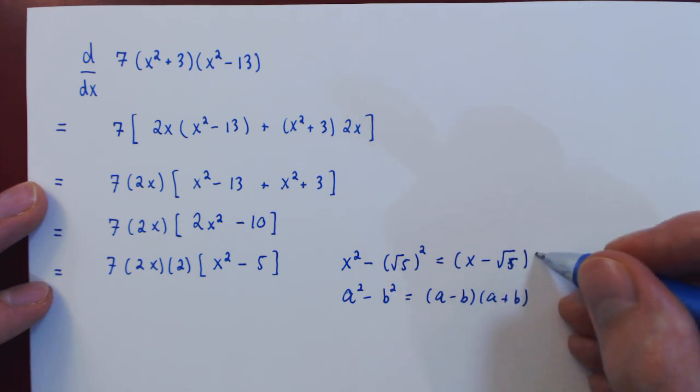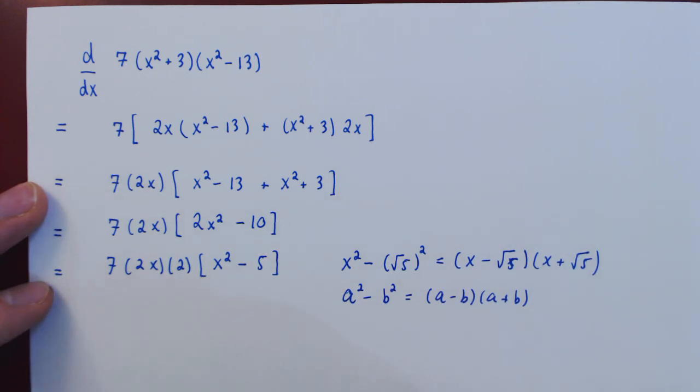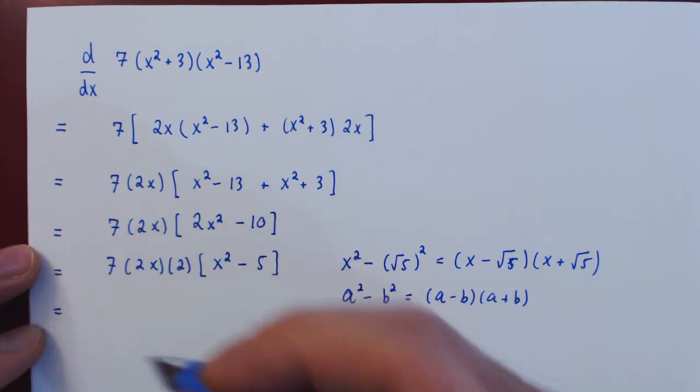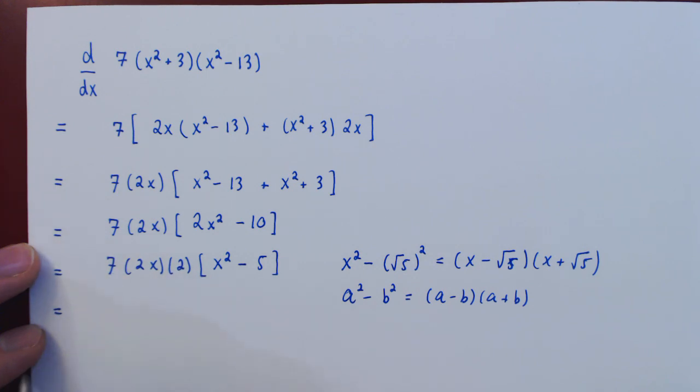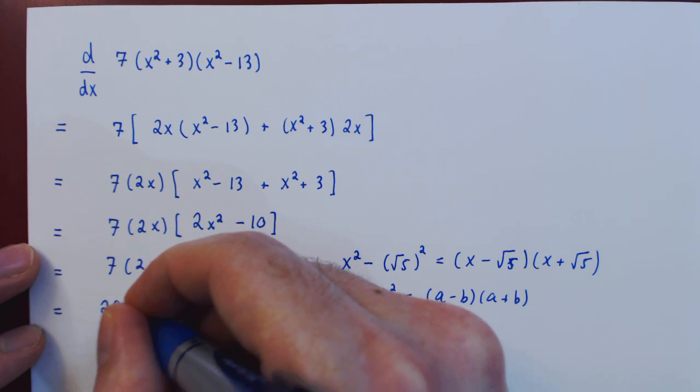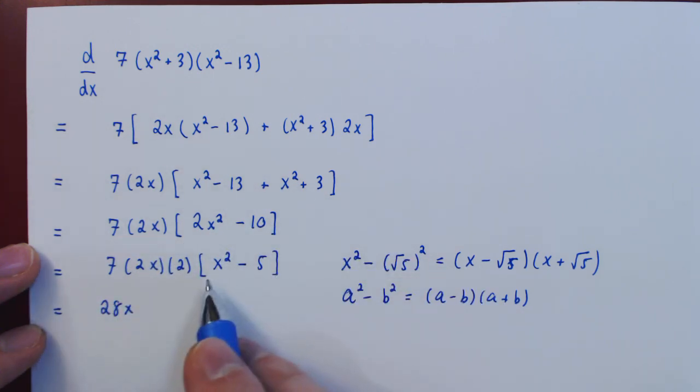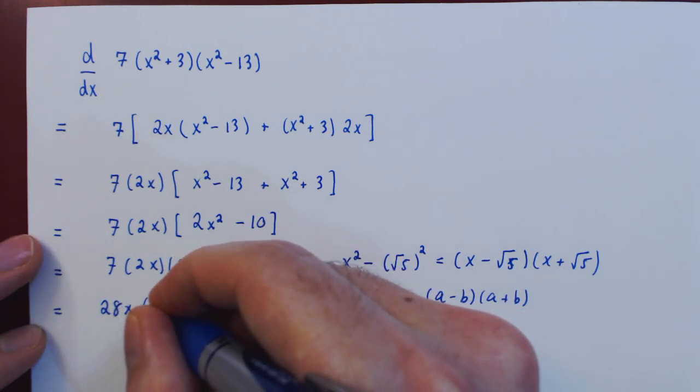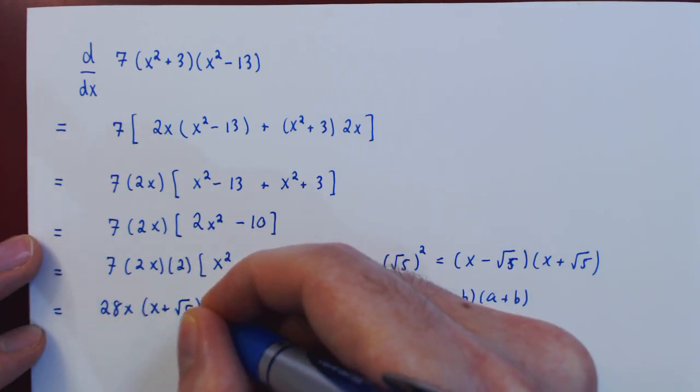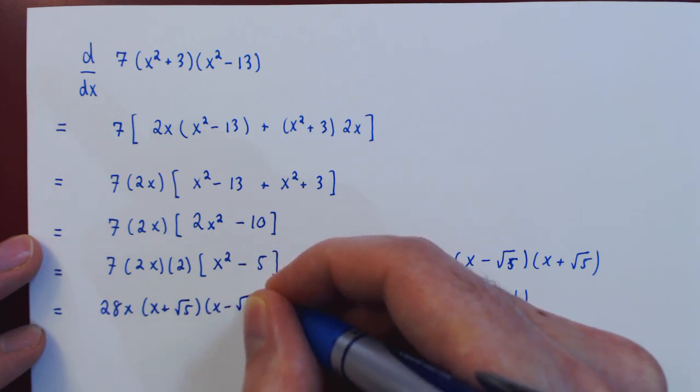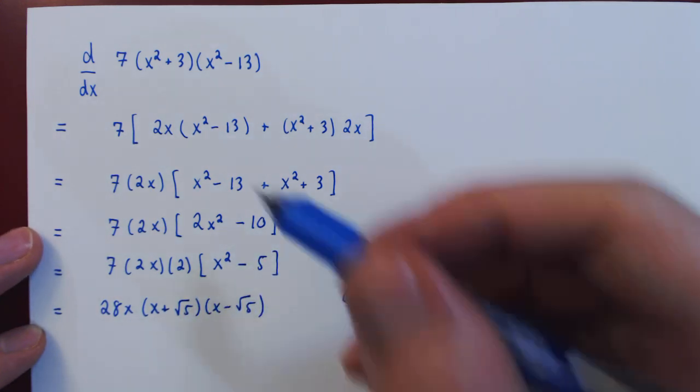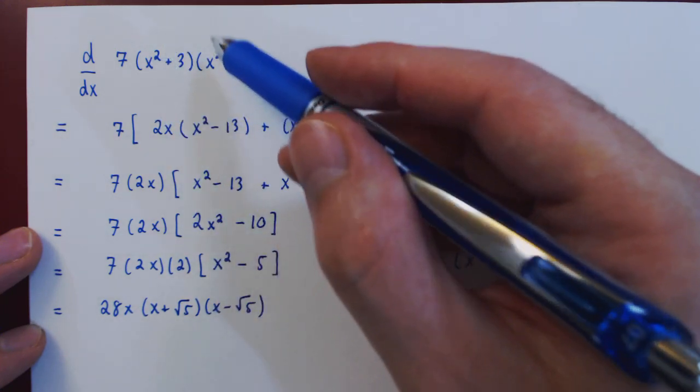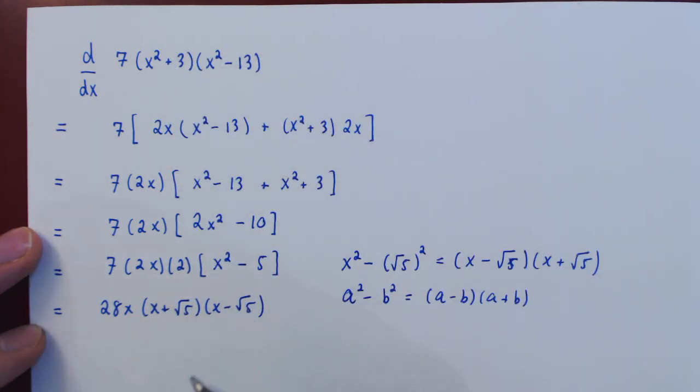And now we will have a complete factoring of our answer. And here we can regroup together the three constants, so 4 times 7 is 28, so we have 28x times the factoring of this quadratic, which is x minus root 5 times x plus root 5, or of course you can swap the order, it doesn't matter. And we now have the derivative of the initial product fully simplified and factored.